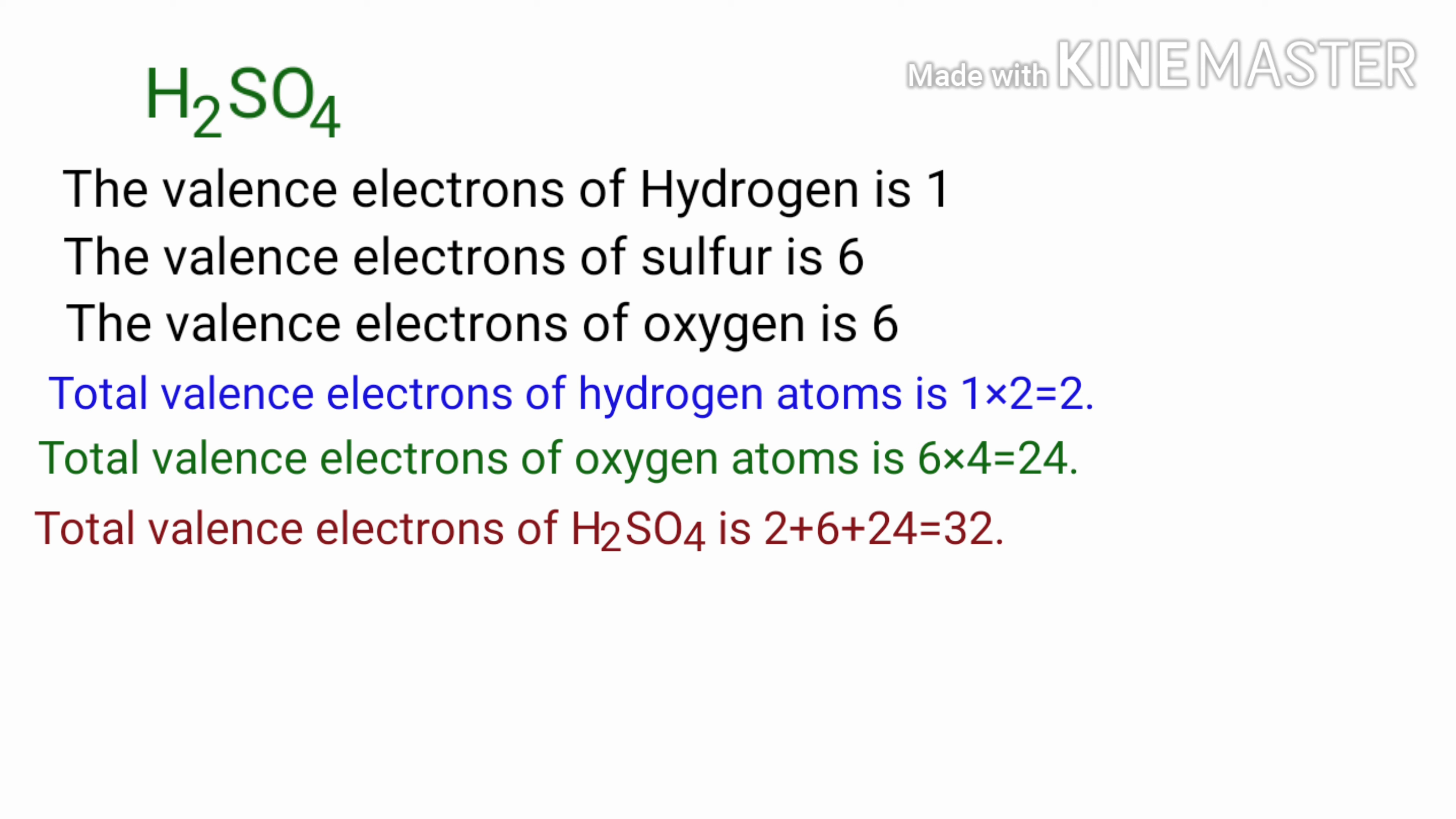Therefore, total valence electrons of H2SO4 is equal to 2 plus 6 plus 24, that is equal to 32.